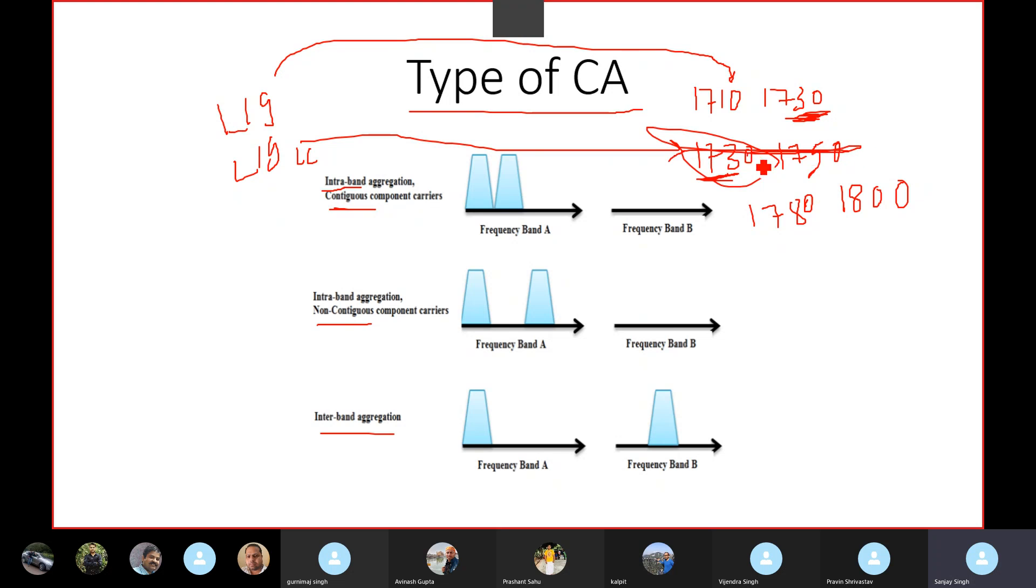Now this is not in picture. So here I can see 1730 and then next frequency started to 1780. So there is a gap of around 50. So this is not contiguous. That's the reason it comes non, that is intra-band, bands are the same here, L19 100, but this is not contiguous. So we can say this is the non-contiguous component carrier.